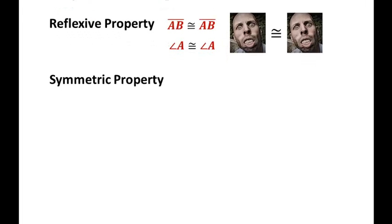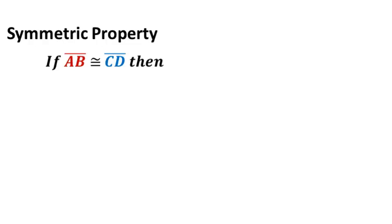Now let's talk about the symmetric property. So if segment AB is congruent to segment CD, then segment CD is congruent to segment AB. So look at these, the two of these. They are exactly the same, AB and CD, but then we just switch it.